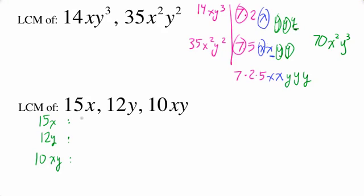So 15 is 3 times 5, 12 is 3 times 4, but maybe the 4 is not a good idea because I see an even number down there. Let's do 3 times 2 times 2, and then 10 is a 2 times 5.